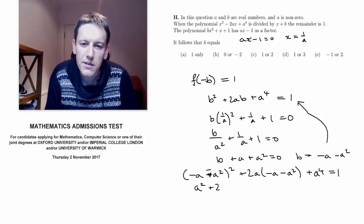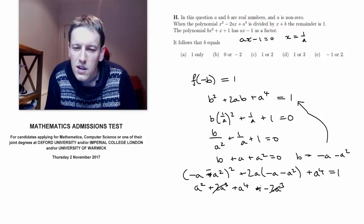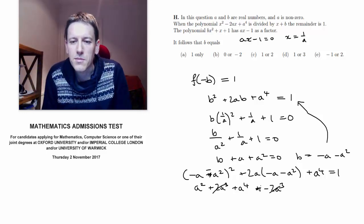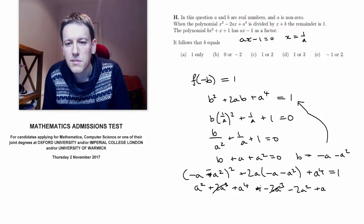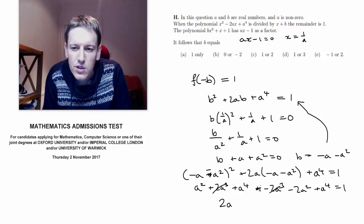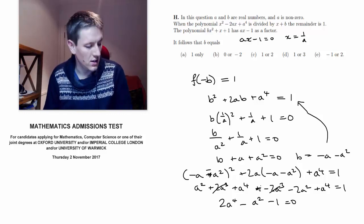So I've got 2a to the 4 minus 2a to the 4 minus 2a cubed, so they cancel out, and minus 2a squared plus a to the 4 equals 1, so I've got 2a to the 4 minus a squared minus 1 equals 0.